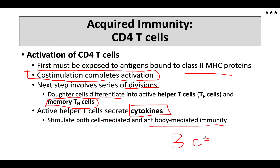Without helper T cells, B cells don't become completely active and we have a handicapped immune system.